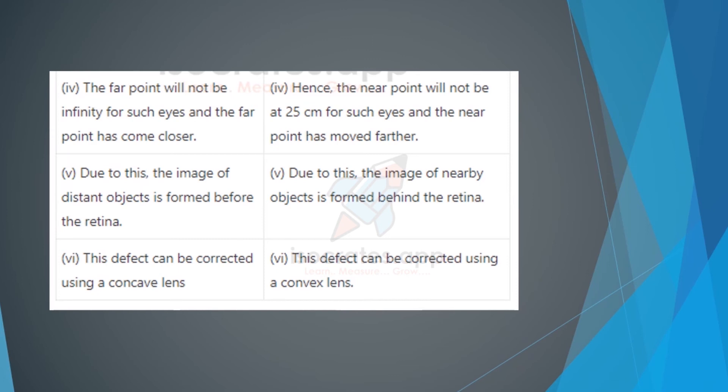The fifth difference: in myopia, the image of distant objects is formed before the retina. In hypermetropia, the image of nearby objects is formed behind the retina. The sixth difference: myopia can be corrected using a concave lens, and hypermetropia can be corrected using a convex lens.